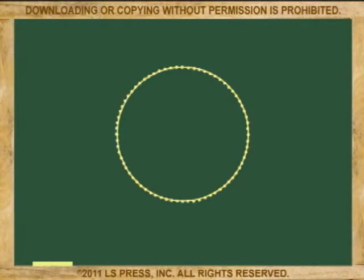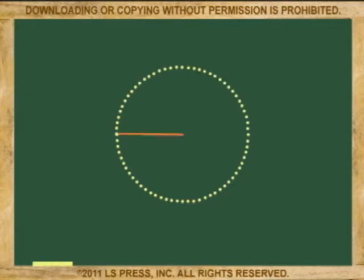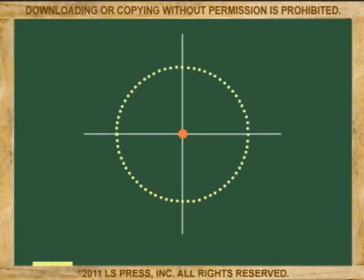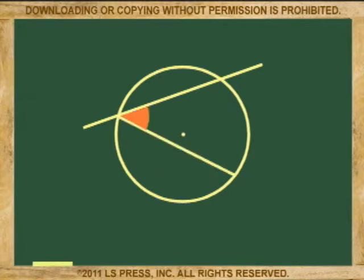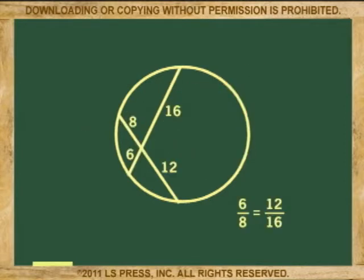We can think of a circle as a polygon with so many sides that it became a smooth curve made of points equidistant from another point called the center. We study circles by examining the way lines and segments interact with them and form angles, cut arcs, and create ratios.